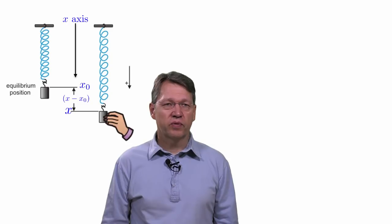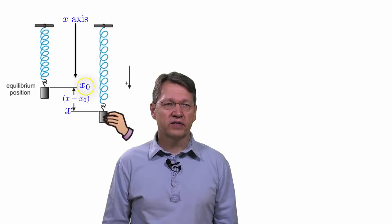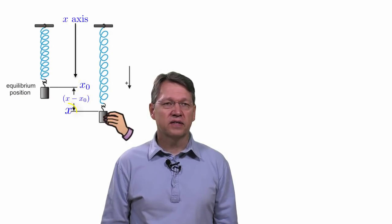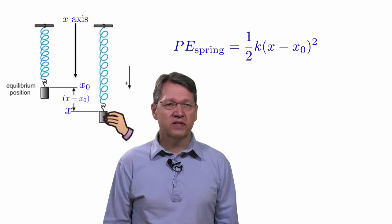Let's look at a diagram showing the equilibrium position of the mass on the spring, which we can call x0 or x-naught. Compare this to a stretched spring where the mass is at x. The potential energy for a spring can be written as 1/2 k(x - x0)².